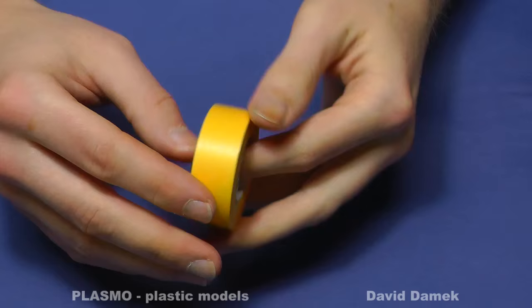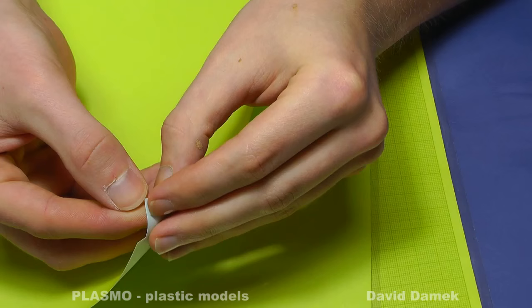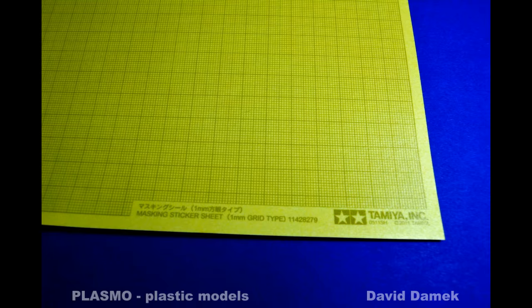Ordinary Tamiya masking tape is nice but it's good to have something bigger. Luckily Tamiya makes a large A4 size stencil sheet for this exact purpose. There are two types of this paper. One is a blank yellow sheet and the second has a millimeter grid.